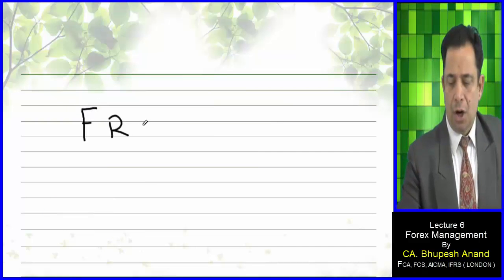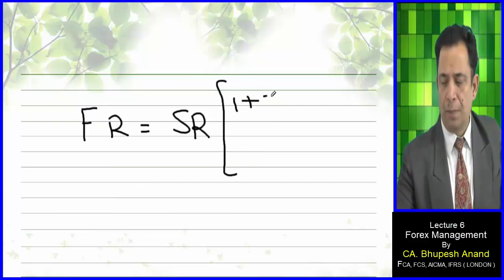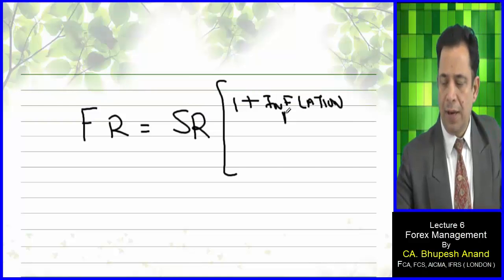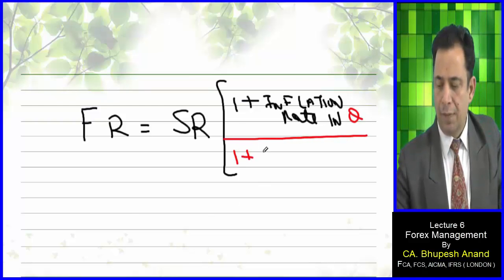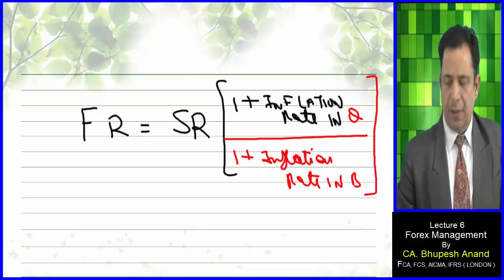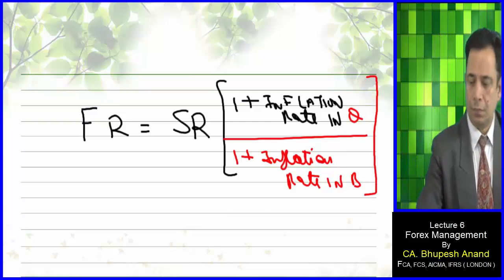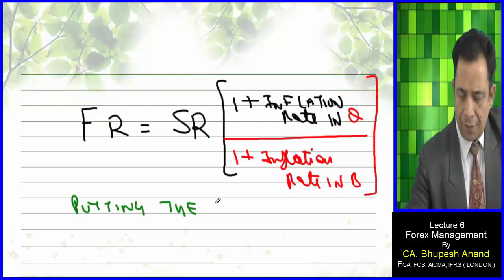Forward rate is equal to spot rate multiplied by (1 plus inflation rate in quote currency) divided by (1 plus inflation rate in base currency). Putting the figures into the formula: